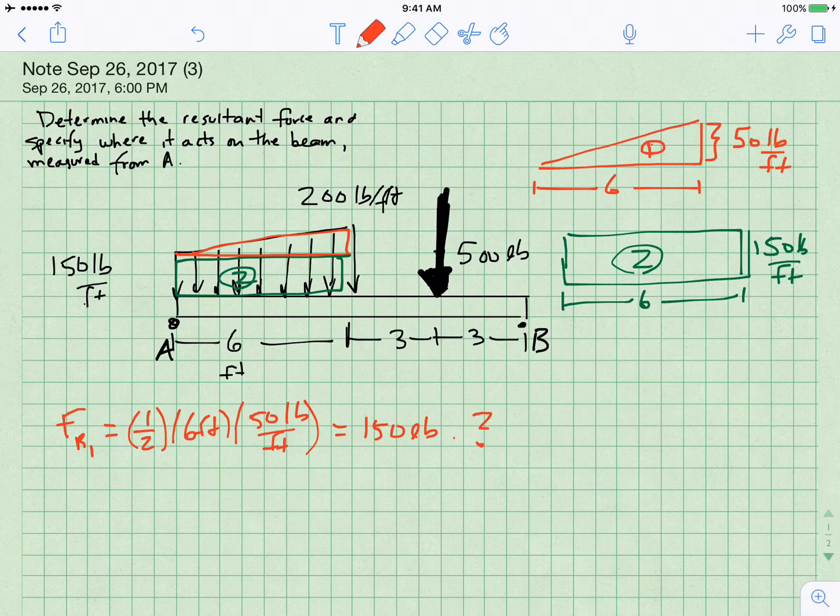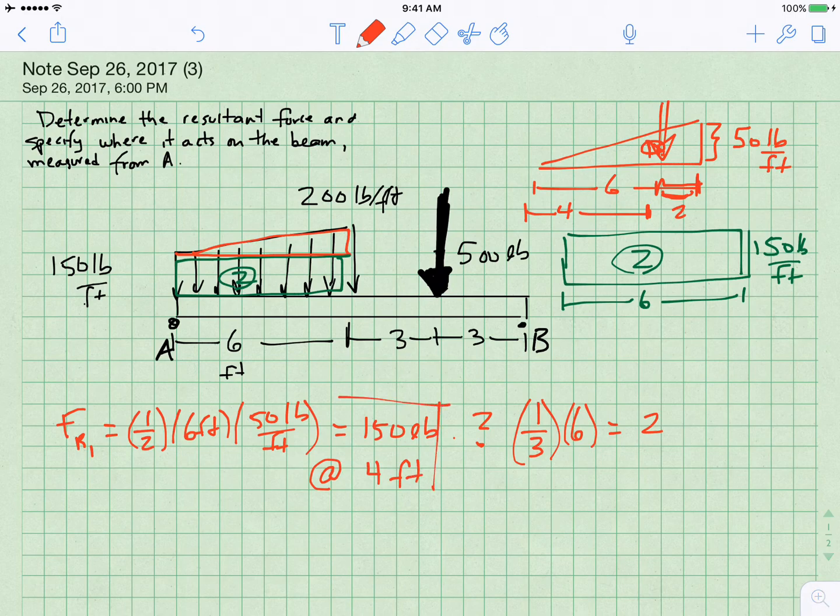Where do we put it? Well, so it will be located at one-third of the distance away from the heavy end or two-thirds of the distance from the light end. So one-third of six is equal to two and what I'm saying is that it will be located just two feet away from the heavy end. So it'll be located out here at x equals four at four feet.